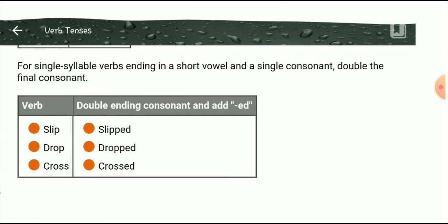For single-syllable verbs ending in a short vowel and a consonant, double the final consonant. For example, the verb 'slip' — 'p' is the last consonant — becomes 'slipped', with double 'p'. Similarly, 'drop' becomes 'dropped', and 'cross' becomes 'crossed'. Slip, drop, and cross are first forms; slipped, dropped, and crossed are second forms.